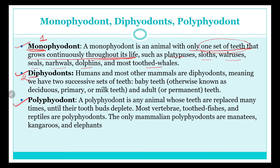'Di' means two, so diphyodont means two successive sets of teeth occur in the life cycle. Humans and most other mammals are diphyodont. First our baby teeth come — also known as deciduous, primary, or milk teeth — and after that our adult, permanent, or secondary teeth come.